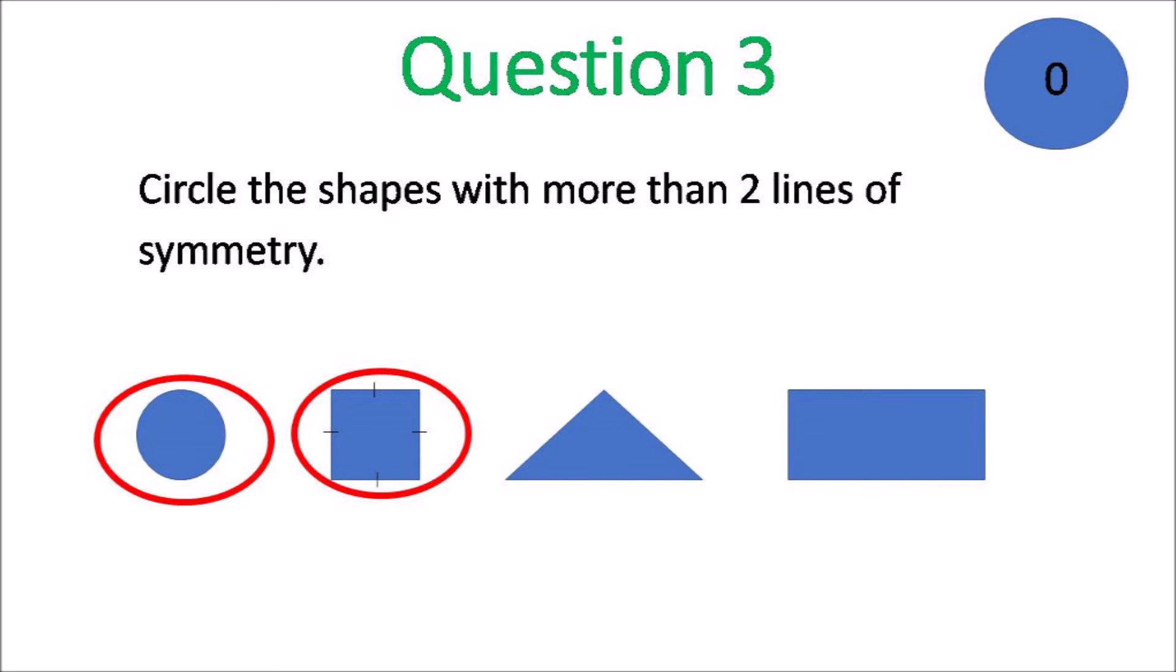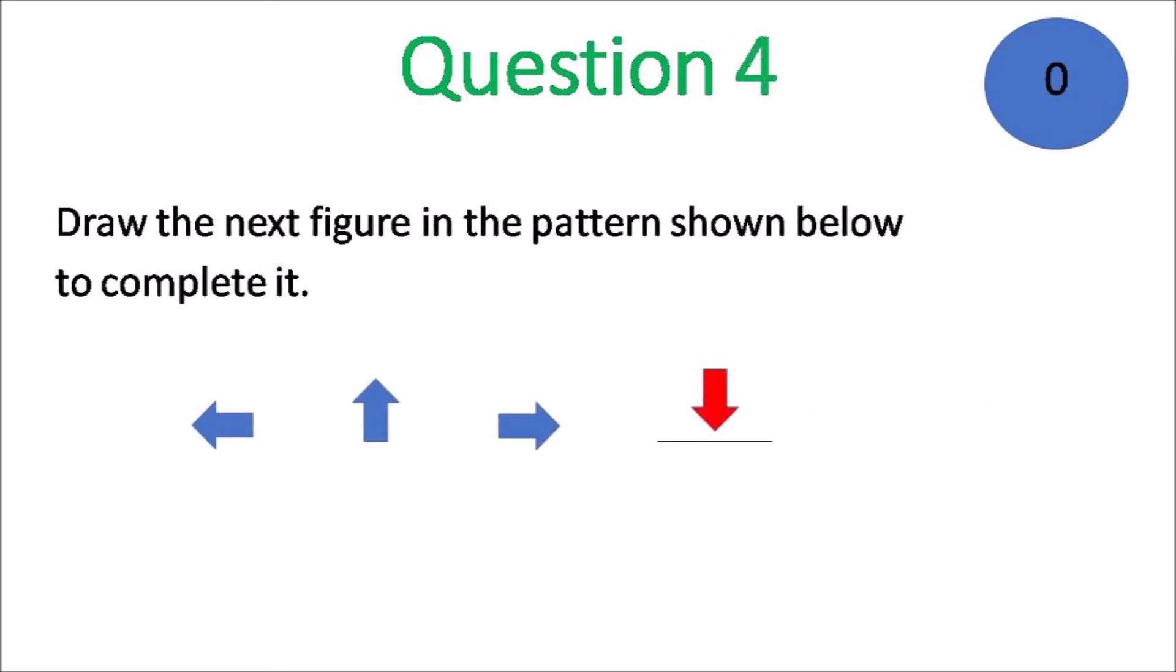The triangle there would have 1, the rectangle would have 2. Question 4. The first shape you turned it 90 degrees up. Turned it 90 degrees again it's across. Turned it 90 degrees and it would be down.